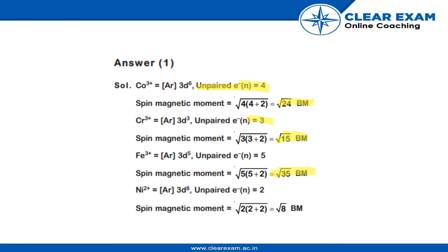Similarly, Ni2+ has 3d8 configuration and its unpaired electrons are 2. N becomes 2. The spin magnetic moment is √(2×4) = √8 BM for Ni2+.